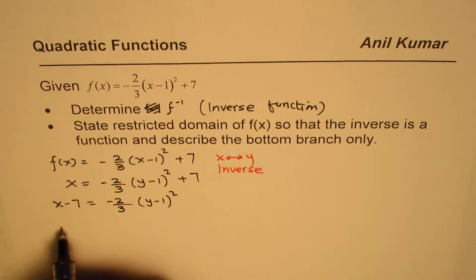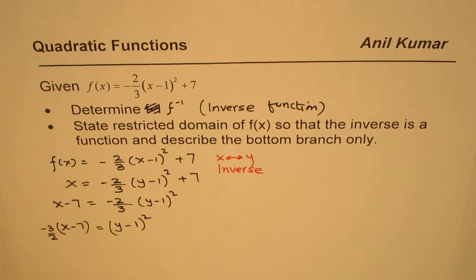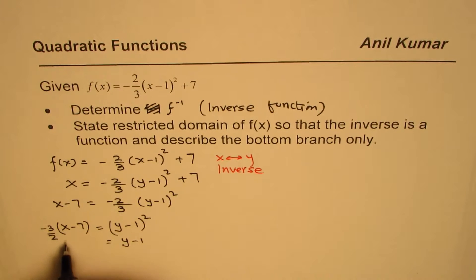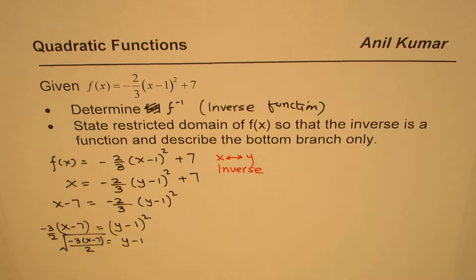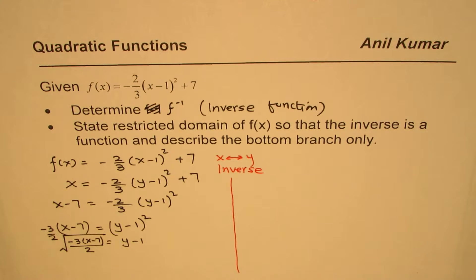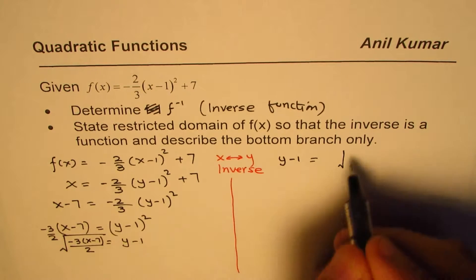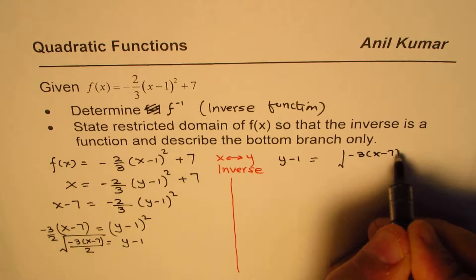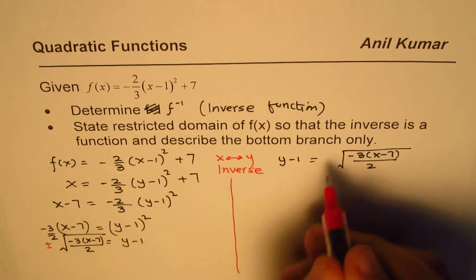Now we divide both sides by -2/3, which is the same as multiplying by -3/2, giving us (x-7) × (-3/2) = (y-1)². Now we take the square root. Whenever you square root, you must always include plus and minus — that is very important, don't forget that. Since (-2)² = 4 and (2)² = 4, we get y - 1 = ±√(-3(x-7)/2).